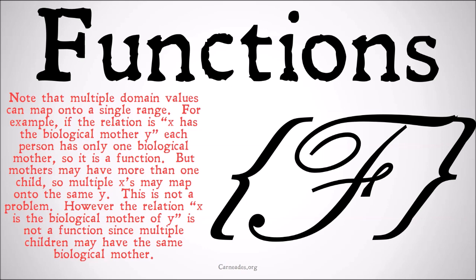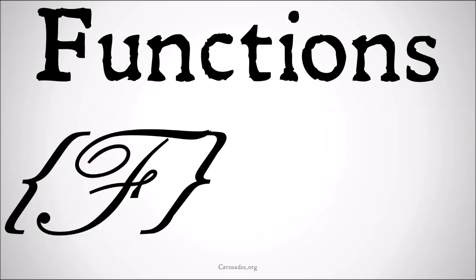But when x is the mother, since that can map onto multiple people, the domain is a single person but the range has multiple options for each individual person, that's not a function. And we'll see why in just a second.